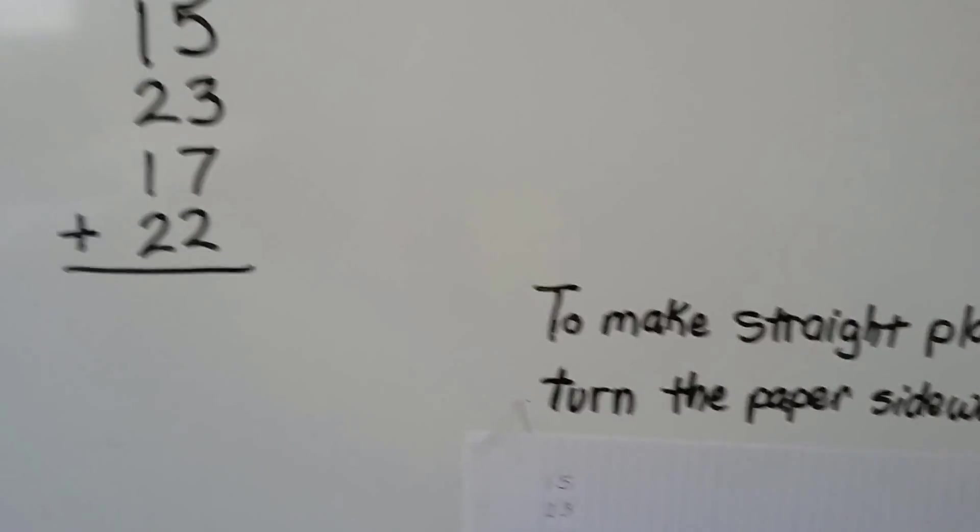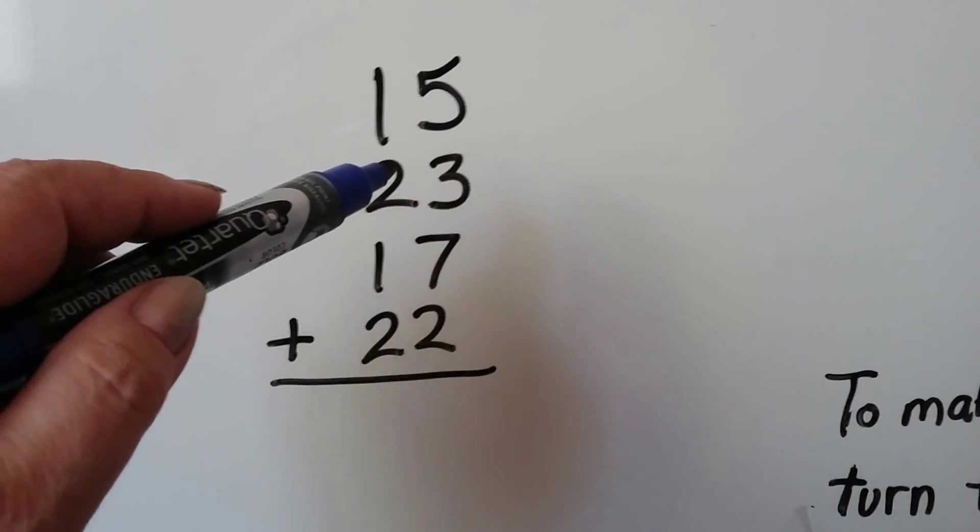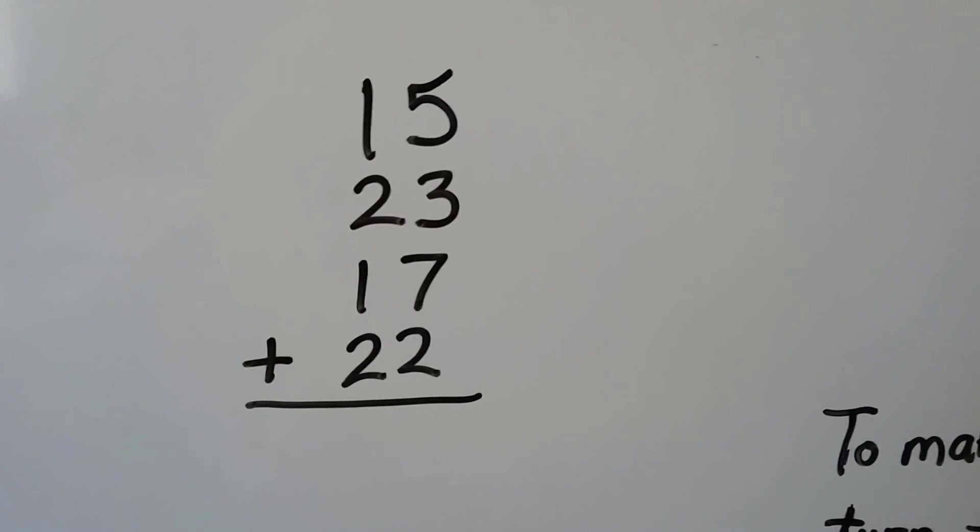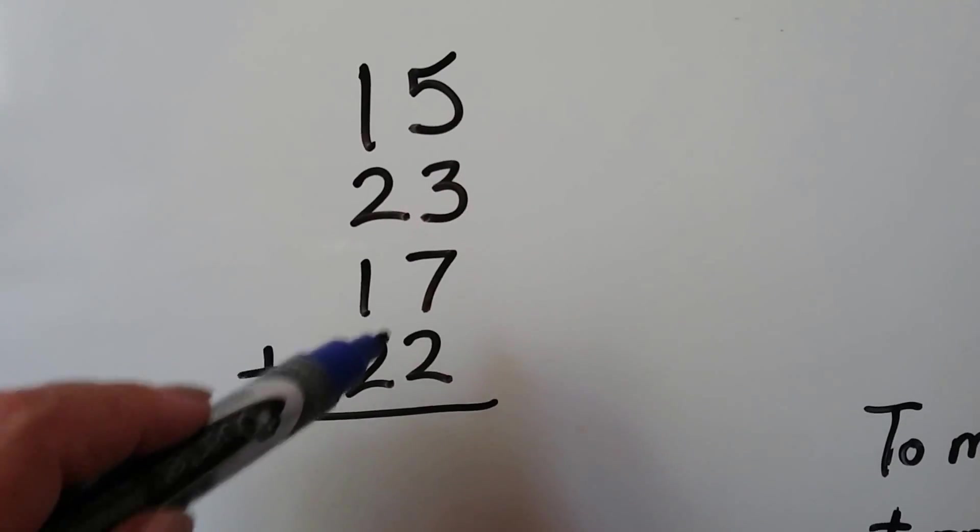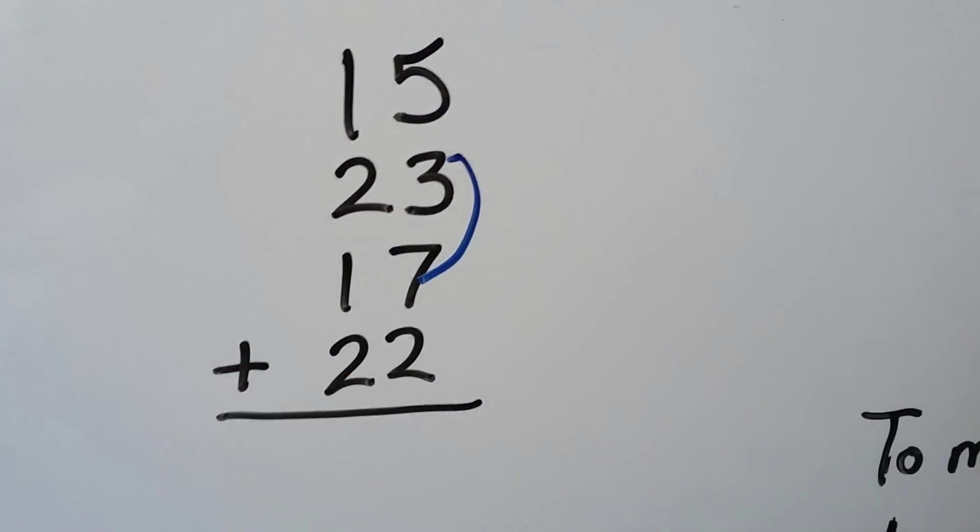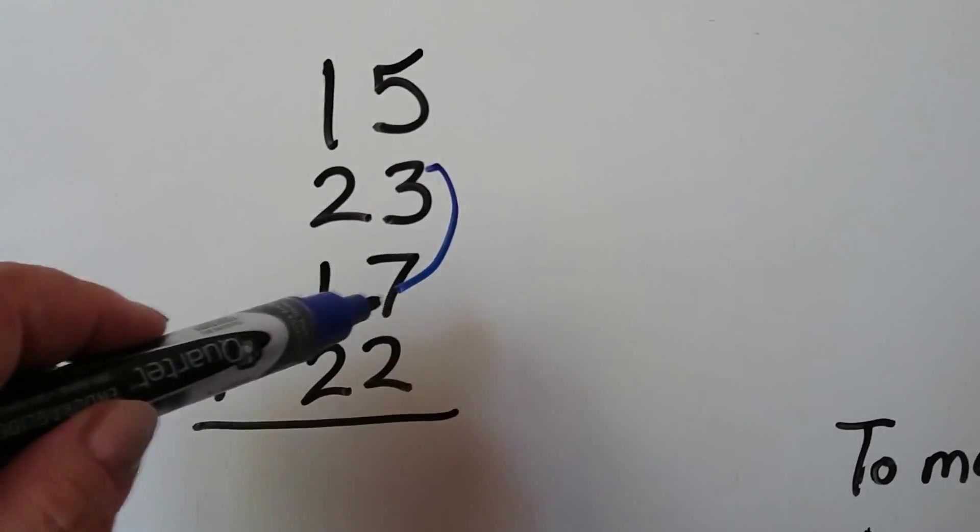So if we're going to use pencil and paper or in this case my marker on the board, we start by adding the ones place and we look for friendly numbers, compatible numbers. And I see a couple of them right away. I see three and seven. Three and seven makes a ten.